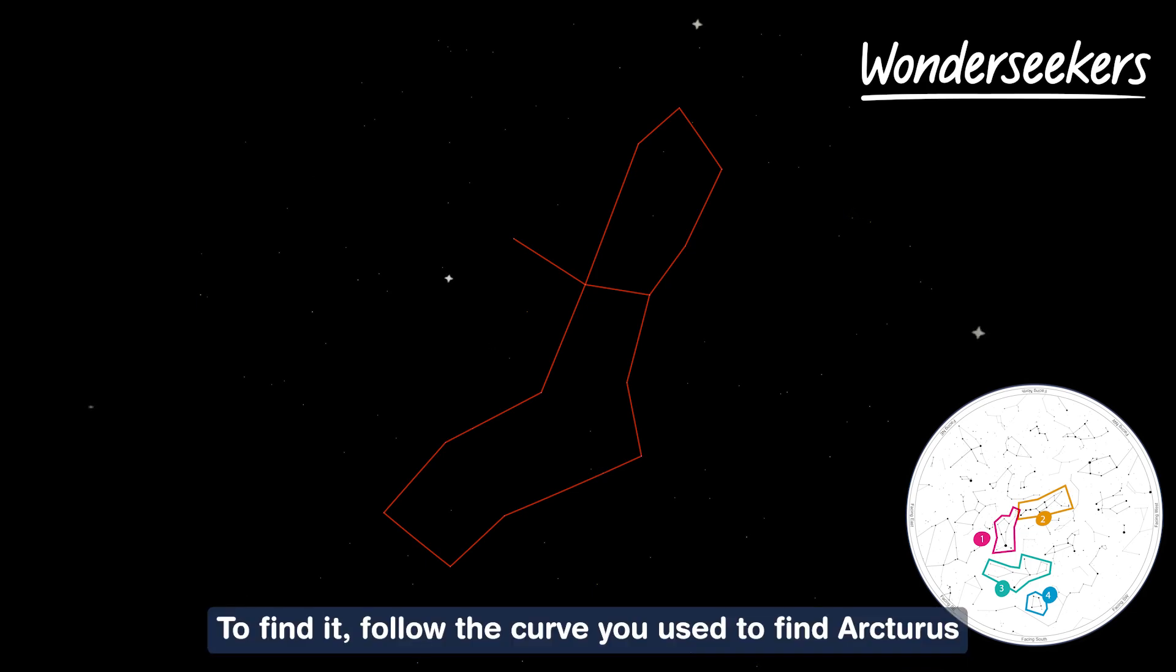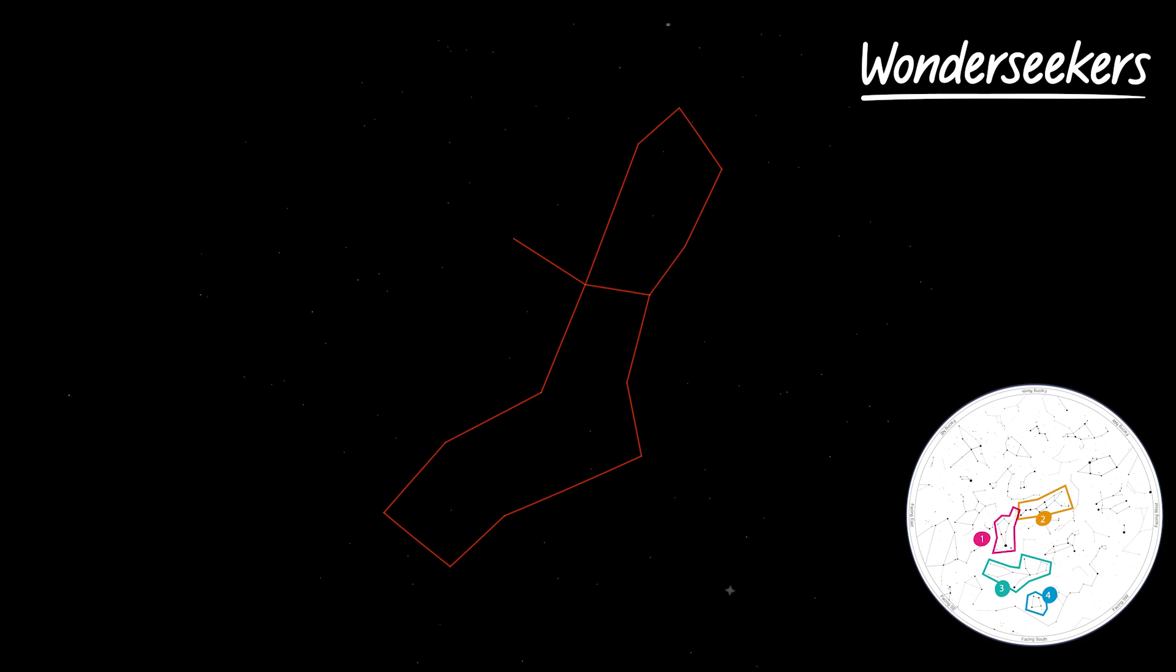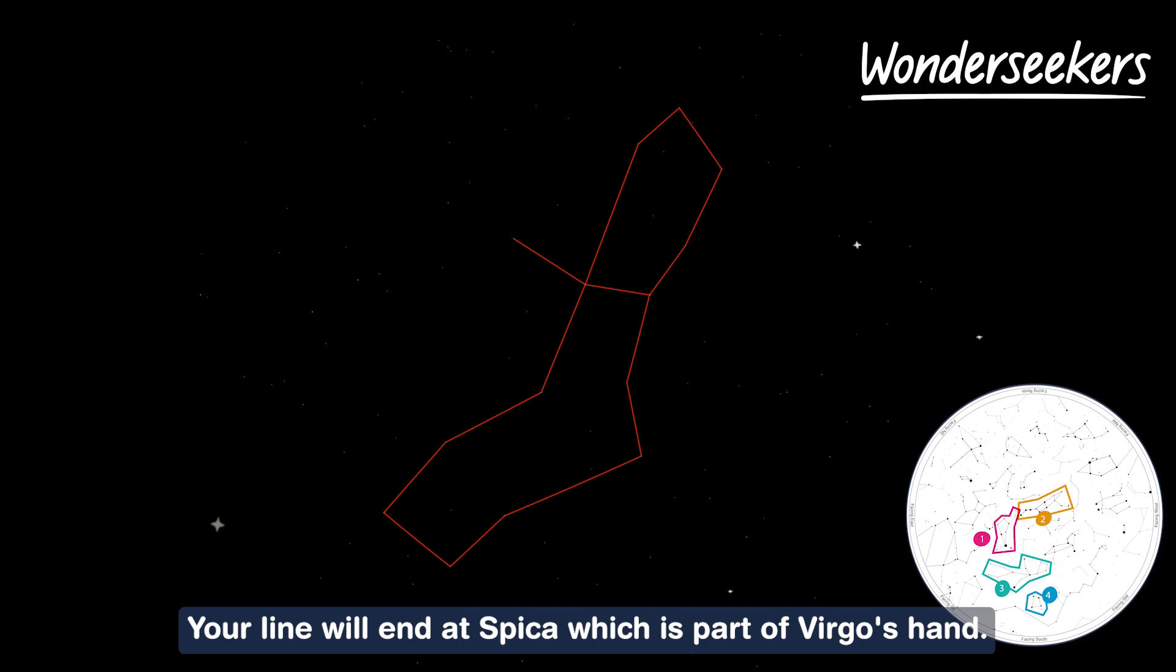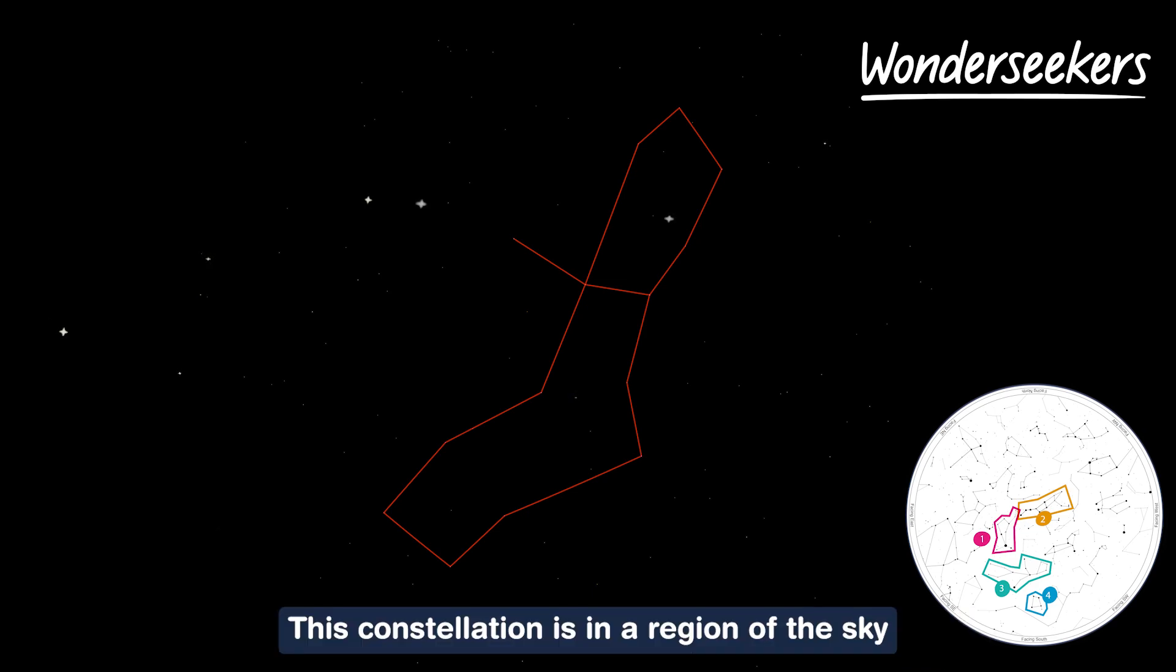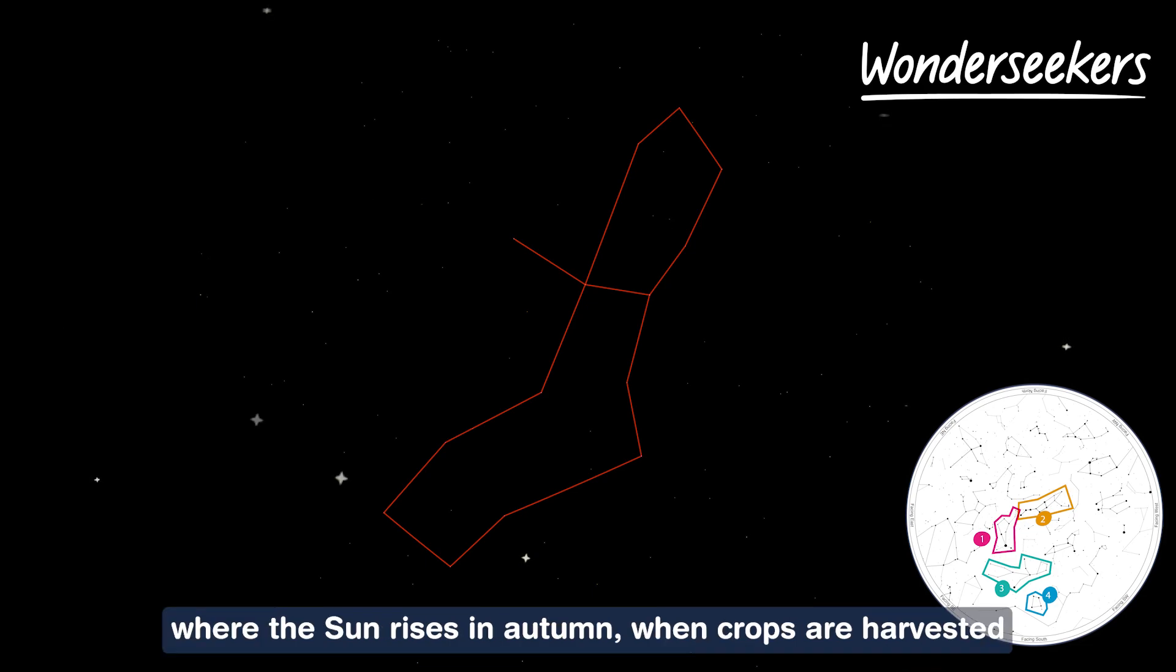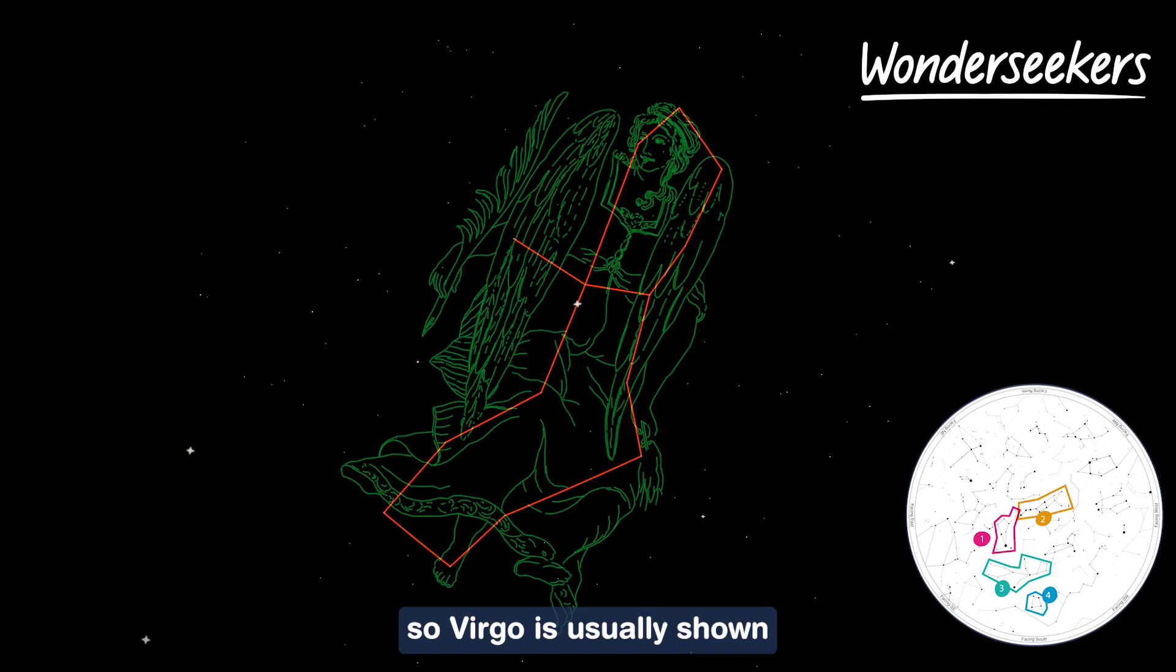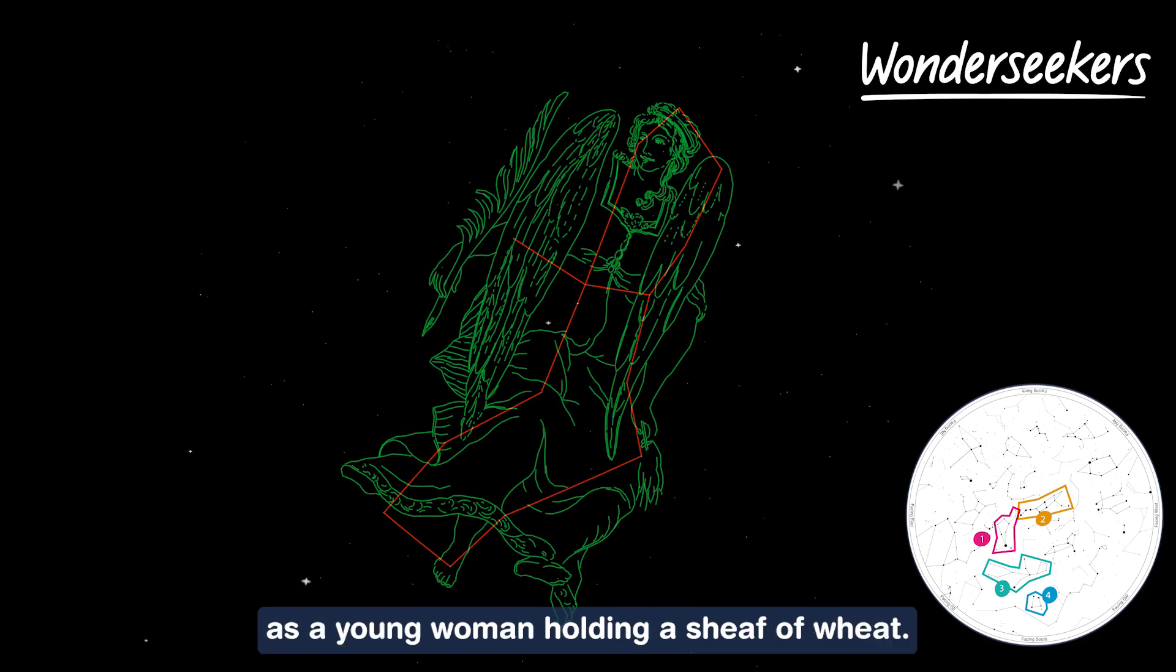To find it follow the curve you used to find Arcturus and continue it with Arcturus as the midpoint. Your line will end at Spica which is part of Virgo's hand. This constellation is in a region of the sky where the sun rises in autumn when crops are harvested so Virgo is usually shown as a young woman holding a sheaf of wheat.